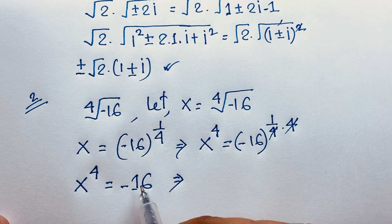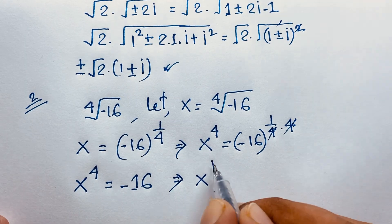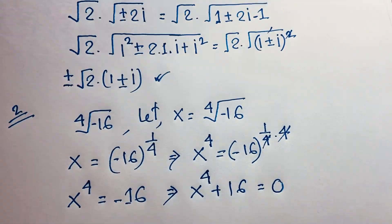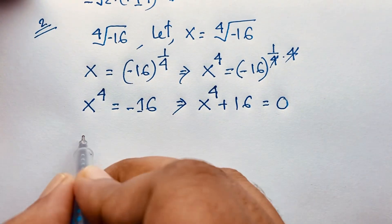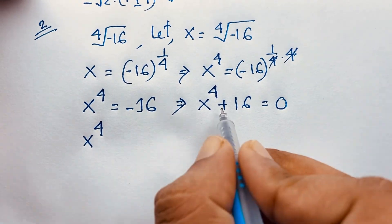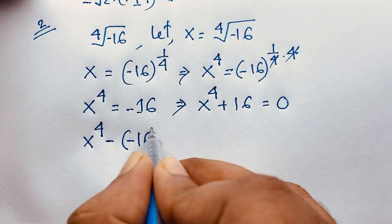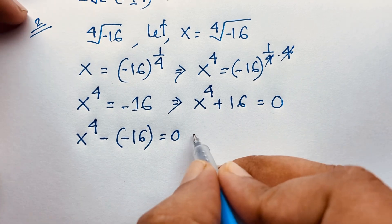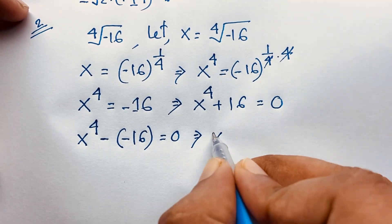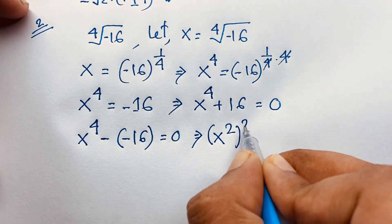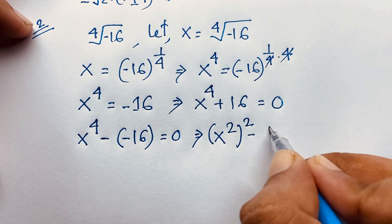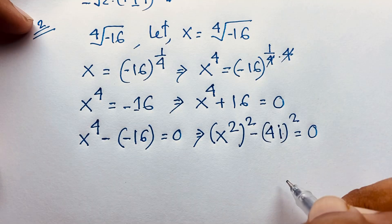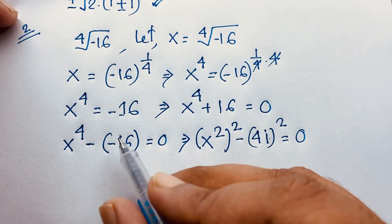Then moving the negative value to the other side, x to the power 4 plus 16 equals 0. Now I write x to the power 4 as x squared, whole squared, and negative 16 as 4i whole squared — because i squared equals negative 1, so 4i whole squared equals negative 16. Applying the identity a squared minus b squared equals a plus b times a minus b.